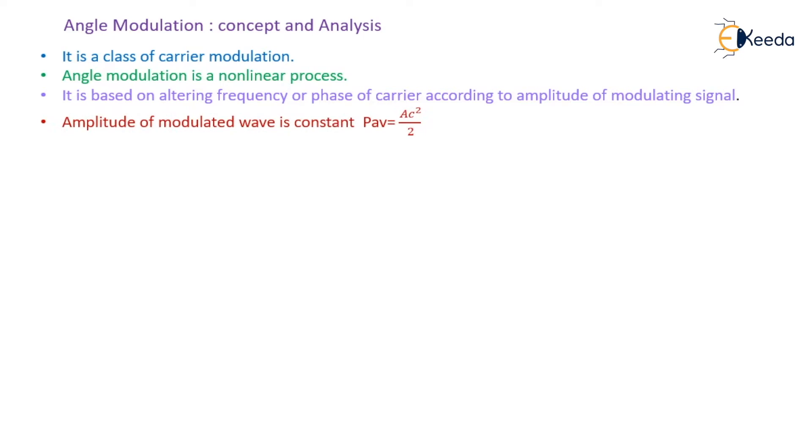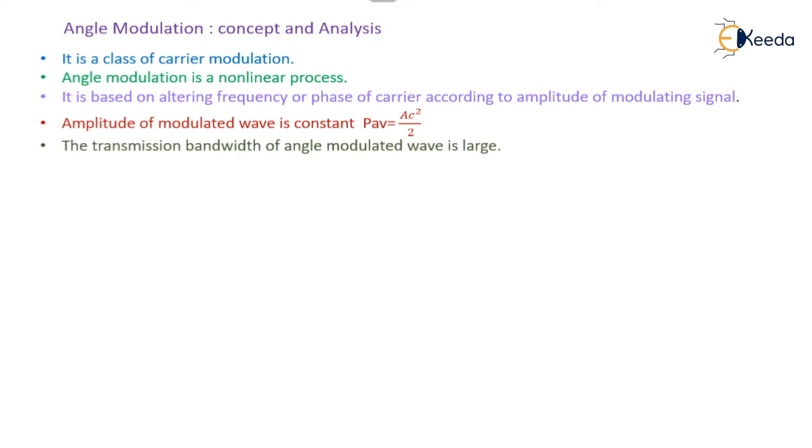The amplitude of the modulated wave is constant throughout. So if you want to measure the average power, that will be equal to Ac squared divided by 2, where Ac is nothing but the carrier amplitude. The transmission bandwidth of angle modulated wave is large.